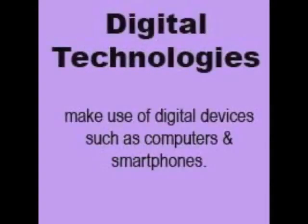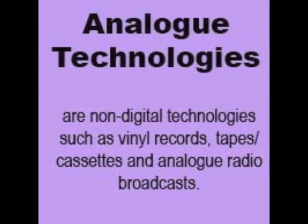Creative media production can take place using analogue and digital technologies. Digital production makes use of digital devices, such as computers, in the production process. This could be the use of digital cameras to make a moving image product. Any camera which uses internal digital memory or an SD card to store footage is digital, which means you would also need a computer to edit the digital footage. Analogue refers to non-digital technologies such as vinyl records, tapes or cassettes. This could be the use of a traditional camera to take images for a magazine. Unlike a digital camera, an analogue camera would use a roll of film which is loaded into the camera and uses light to capture the images onto the film, and this is then developed in a lab to produce physical photographs.